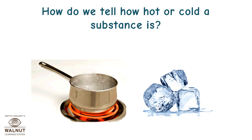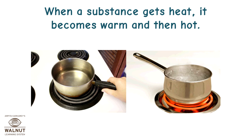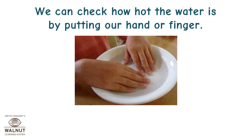How do we tell how hot or cold a substance is? When a substance gets heat, it becomes warm and then hot. We can check how hot the water is by putting our hand or finger.